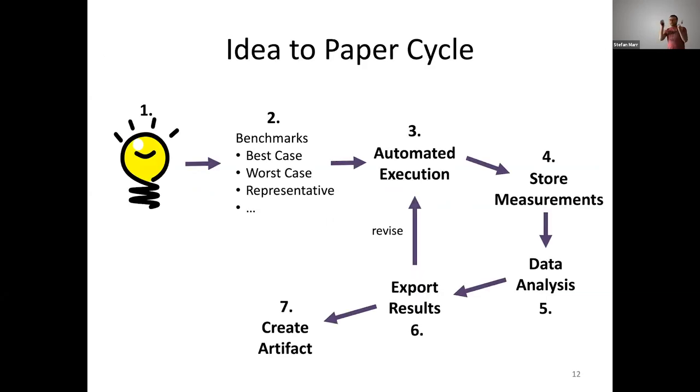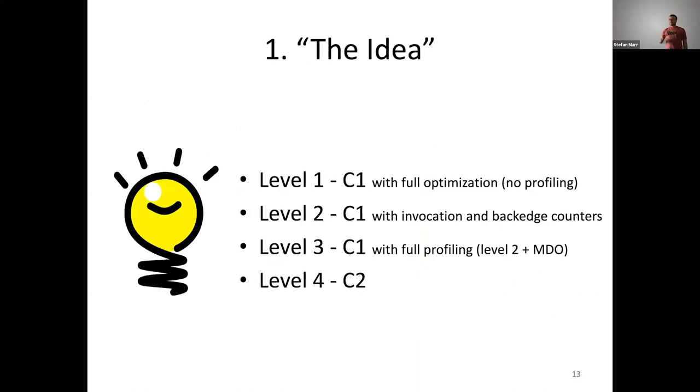So, in my idealized world, writing a paper looks perhaps something like that. If you have an idea, we decide on a couple of benchmarks. Then we execute those benchmarks. Manage the results that we get, store them, analyze them, report them, turn them into paper-worthy plots. And then perhaps at the end, create an artifact from that. So, in our specific case, the idea was, let's introduce tiered compilation into our just-in-time compiled system.